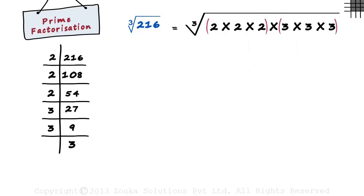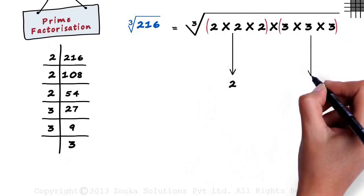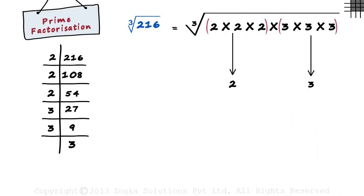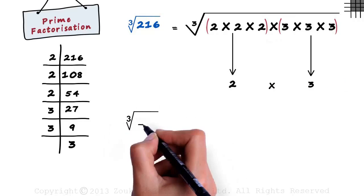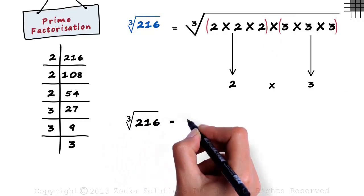So from the first group, we pick 2 and from the second group, we pick 3. And after we multiply them, we get 6. Hence, the cube root of 216 equals 6.